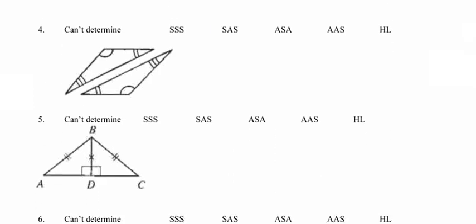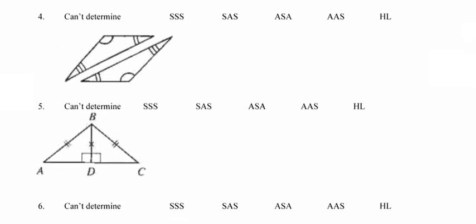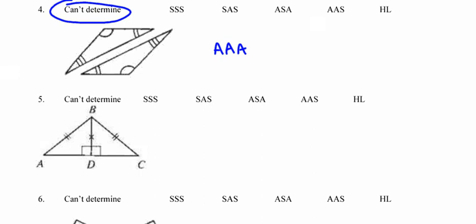Looking at the next picture, what we've got are three pairs of congruent angles — angle-angle-angle. As we saw with the congruent triangles posters, angle-angle-angle does not make congruent triangles. Since each of the five congruence methods involves in some way a pair of congruent sides, and we don't have a pair of congruent sides here, we're not able to determine whether these two triangles are congruent or not.